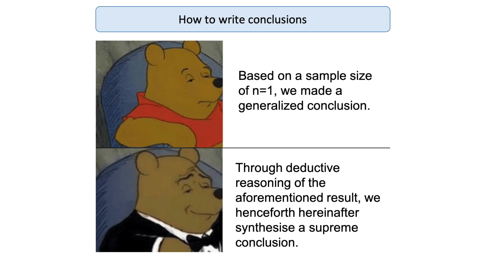End with a concise and informative conclusion. Some reviewers will actually start by reading the conclusion first. Give a list of references to the literature papers that you have studied and discussed within your research proposal — these are the papers that form the basis of your literature review, the research questions, and the proposed methods.